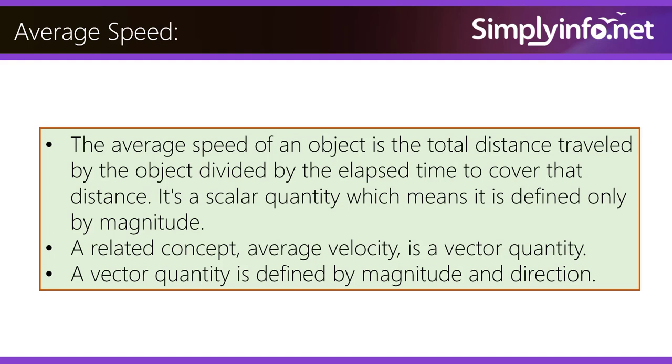A related concept, average velocity, is a vector quantity. A vector quantity is defined by the magnitude and direction.